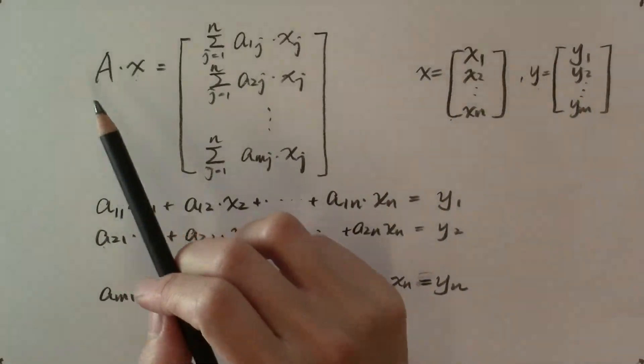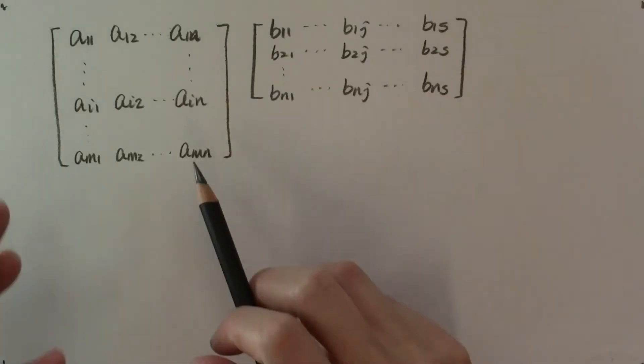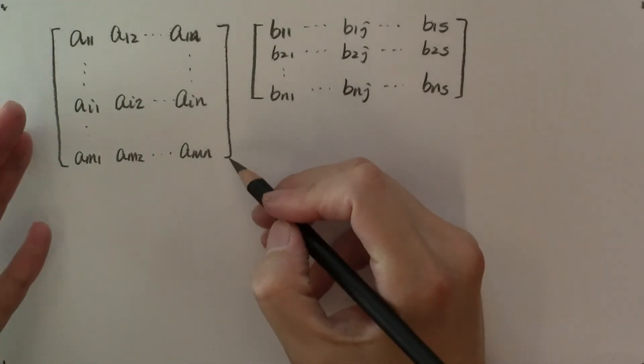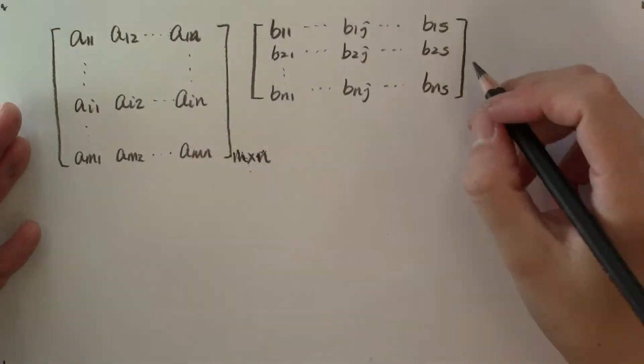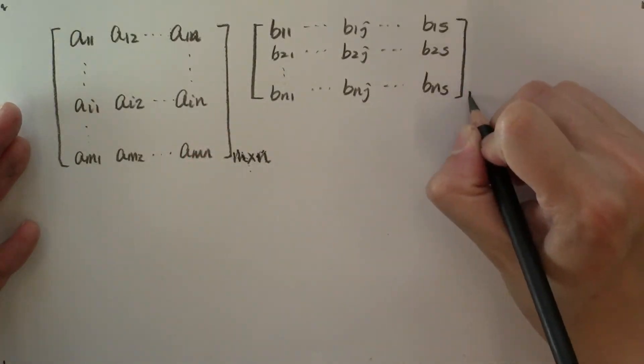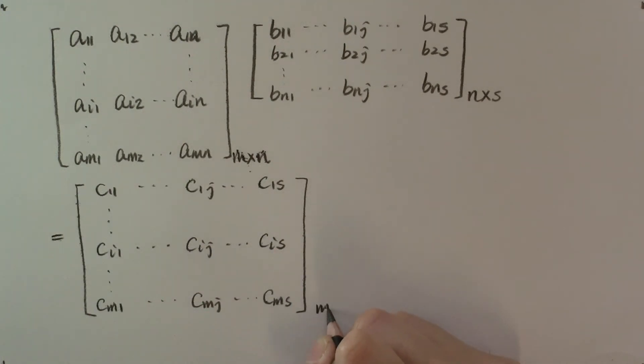Naturally, we can extend this definition to the multiplication of two matrices. Suppose we have matrix A that is m by n and matrix B that is n by s. Then the product is the matrix of dimension m by s.